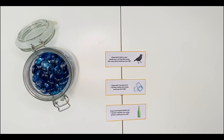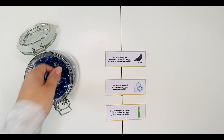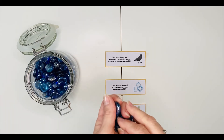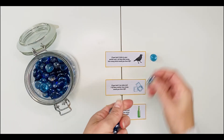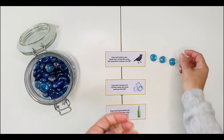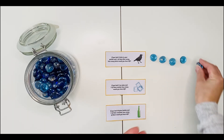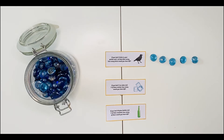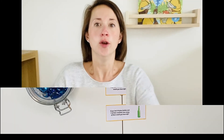These subtraction word problem cards are fantastic. The children could read them and use counters to figure out the answer. So if you had five birds in your garden and one of them flew away, how many would you have left?